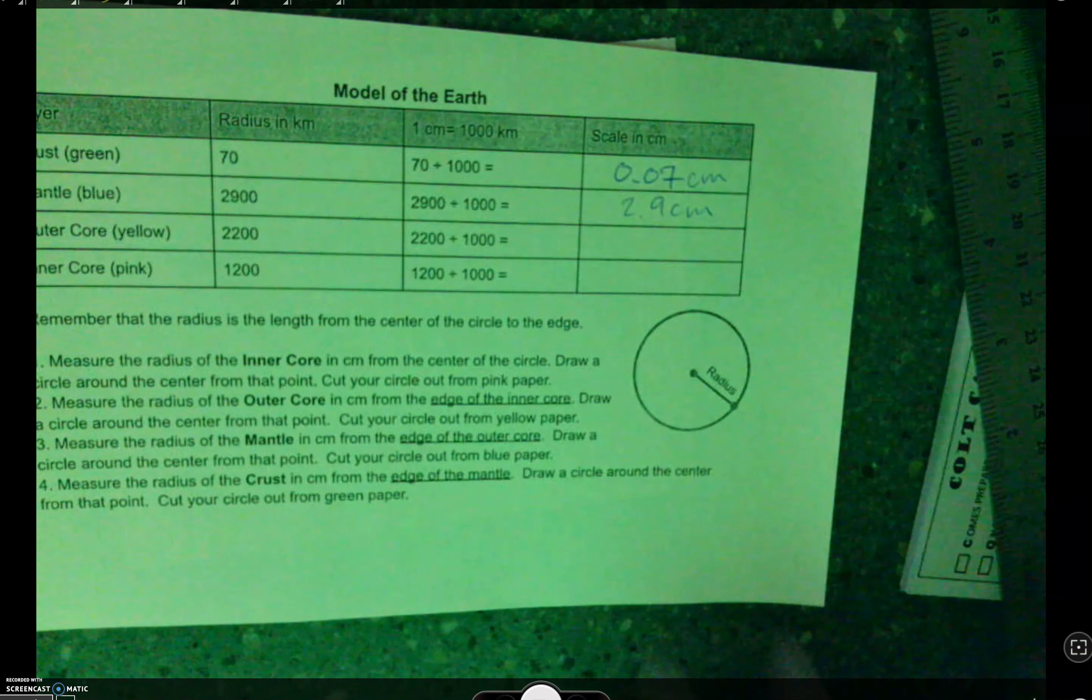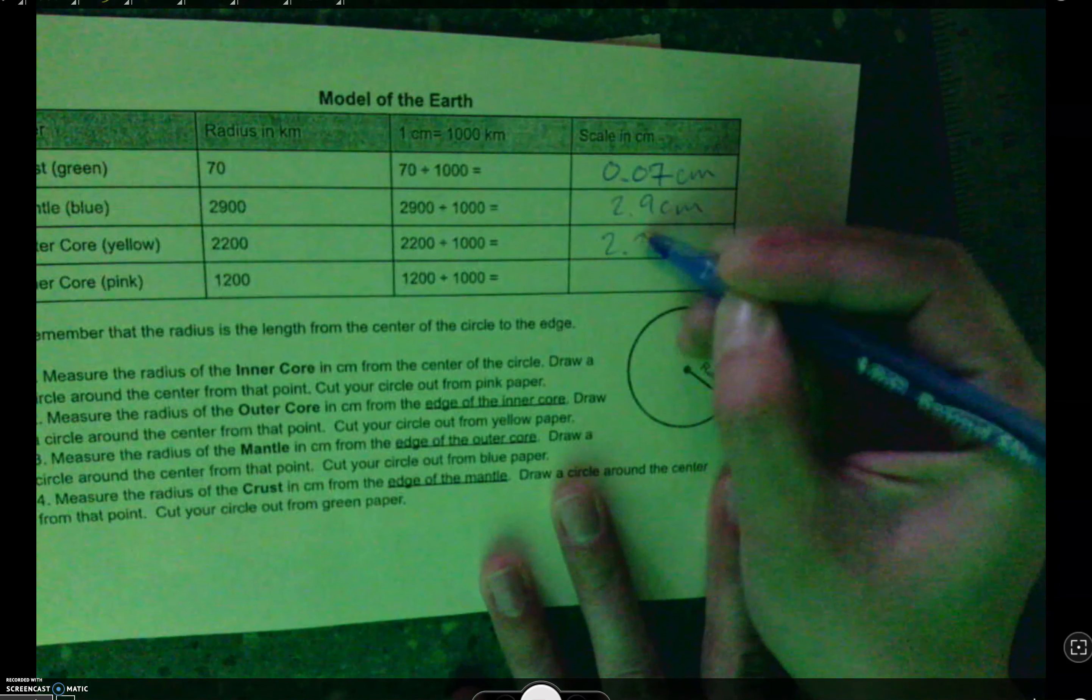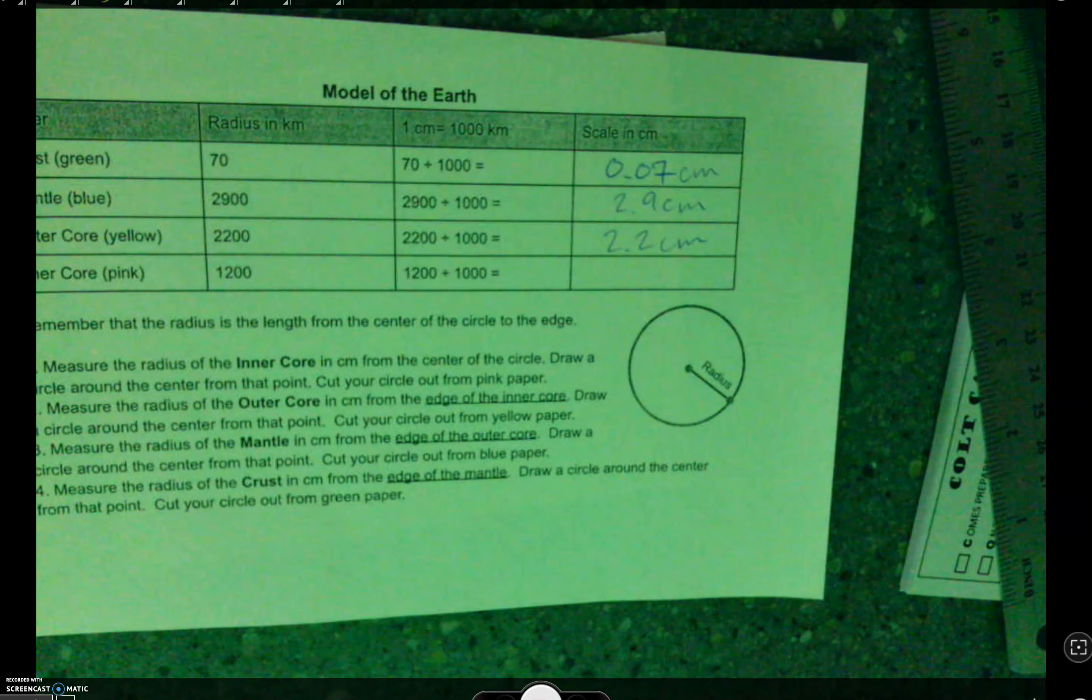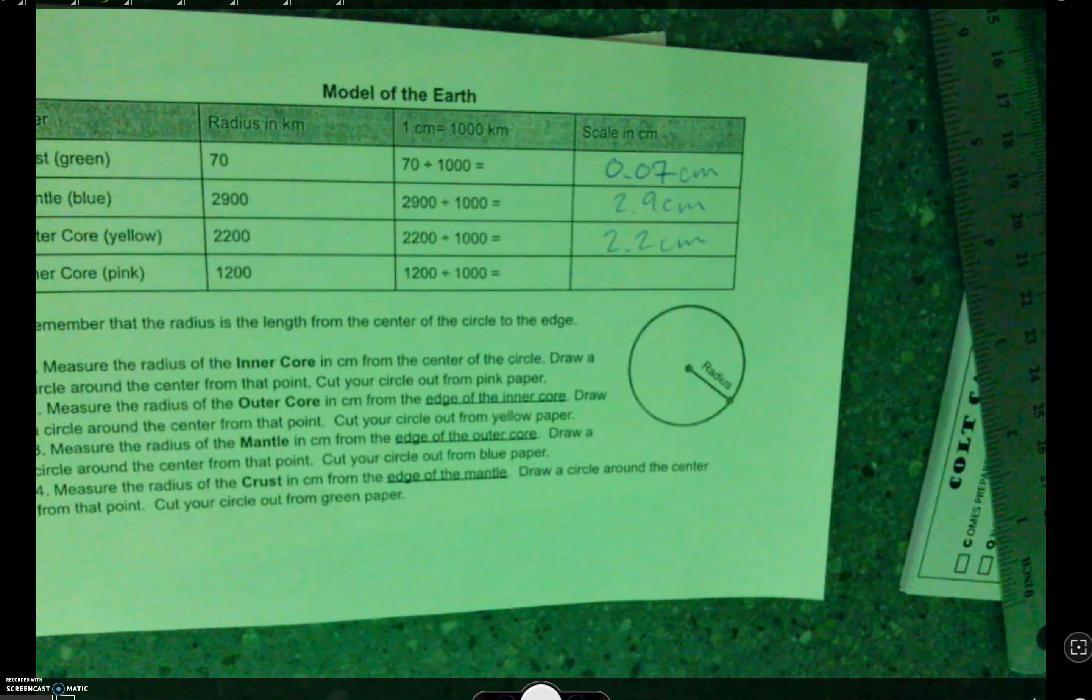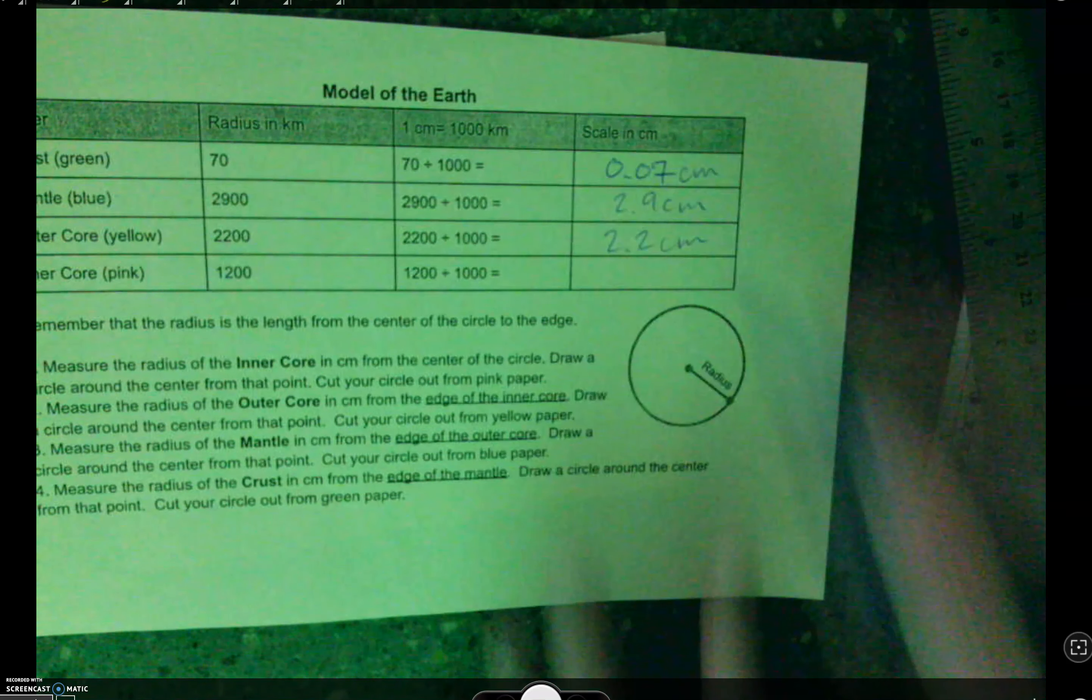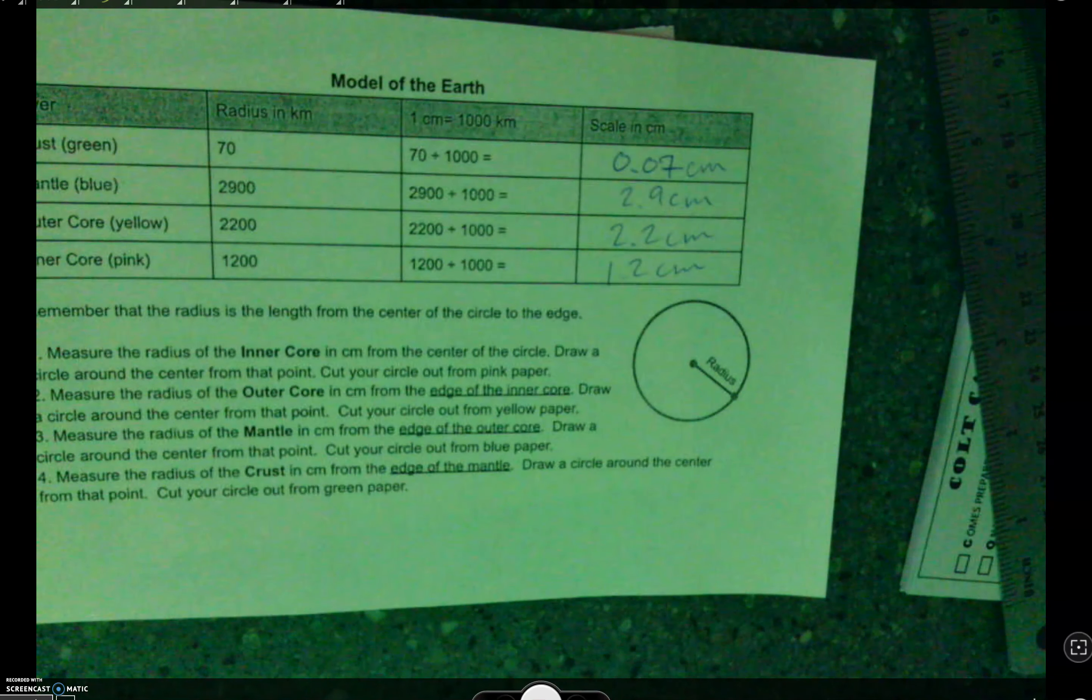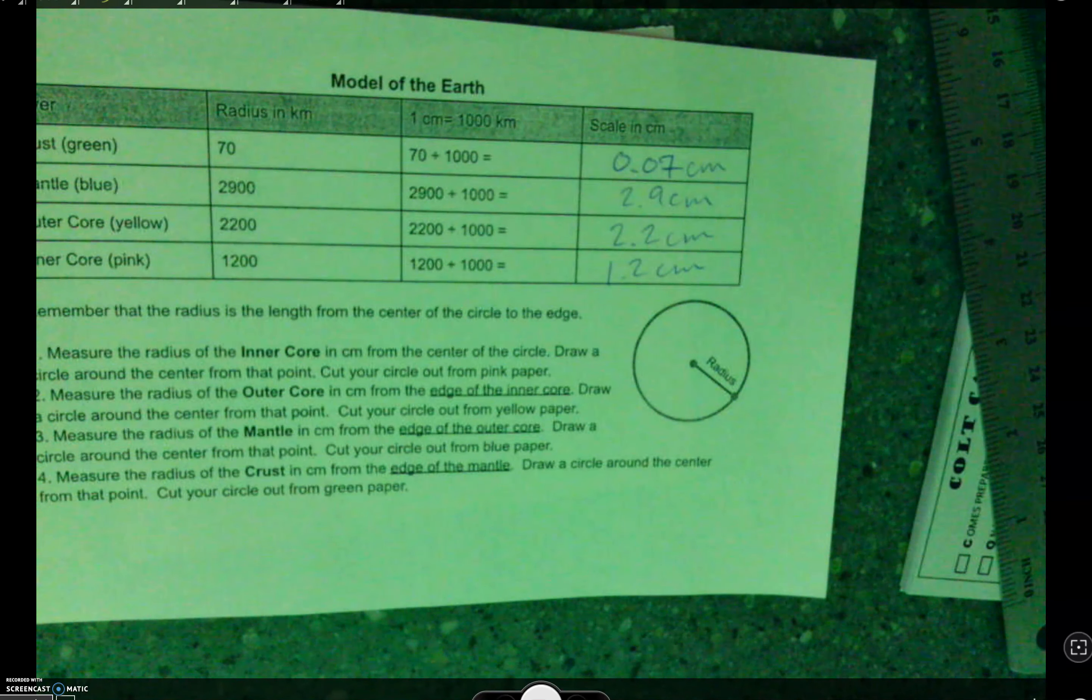Carson. Awesome. Thank you, Carson. 2.2 centimeters. I like that he said centimeters on the end. And the last one, inner core. How many centimeters is that going to be? Alicia. 1.2 centimeters. Sweet. Thank you, Alicia. 1.2 centimeters. Now that you've used your calculators, will you turn your screens back around to face the front for me? Because I have some kind of tricky instructions to give you, okay?